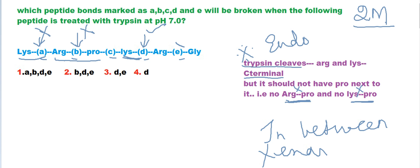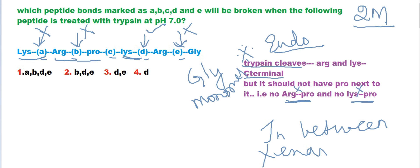One might assume that bond E can also be cleaved by trypsin, but no — it cannot. If that bond is cleaved, there will be a free glycine monomer. Since trypsin is an endopeptidase, not an exopeptidase, it must cleave in between and produce a minimum of a dipeptide. It cannot produce a monopeptide. So bond E is wrong. The only correct answer is B.